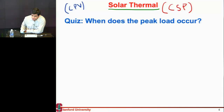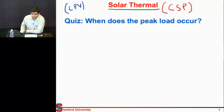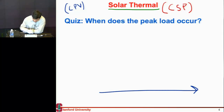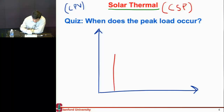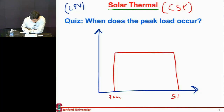I want to ask you: when do you think the peak load occurs on the grid? You start your day at 6, 7, 8 a.m. — or if you're a graduate student, maybe 10, 11 a.m. — and then it goes all the way into late at night. This curve shows the sun going up and down. With good tracking, this would be our solar power generation, starting around 7 a.m. and ending around 5 or 6 p.m. Would the peak load curve be on the right side of the solar irradiance curve, or on the left side?